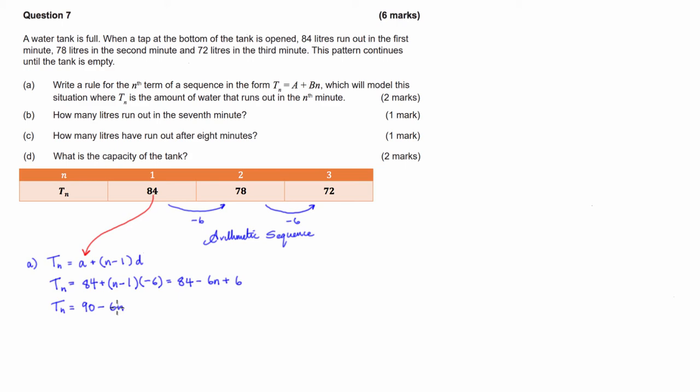Now we have to figure out how many litres of water run out in the 7th minute. For part B, it's only worth one mark because we have this formula from part A, all we have to do is figure out what t_7 is. So t_7 is going to make n equals 7. So I'm going to just say this is 90 subtract 6 times 7, which equals 90 take 42, which is 48.